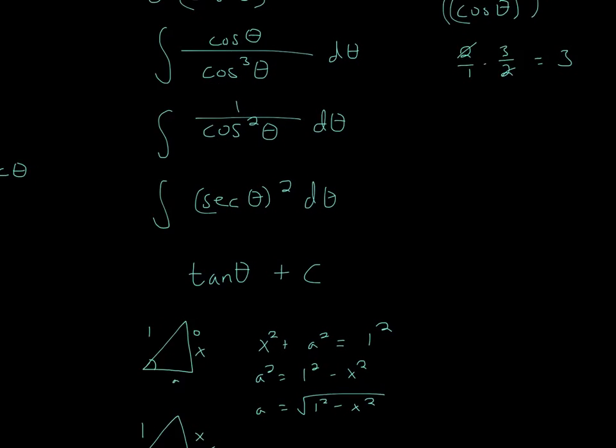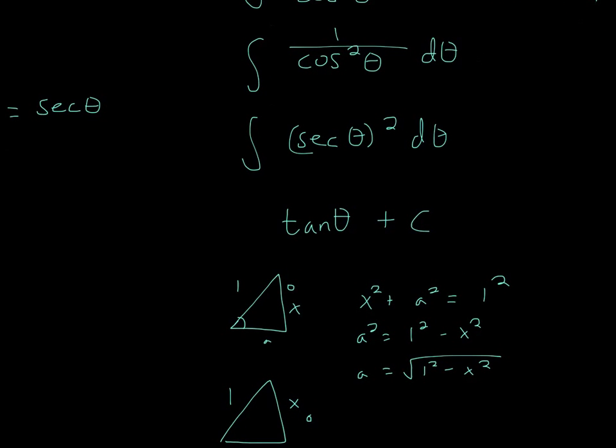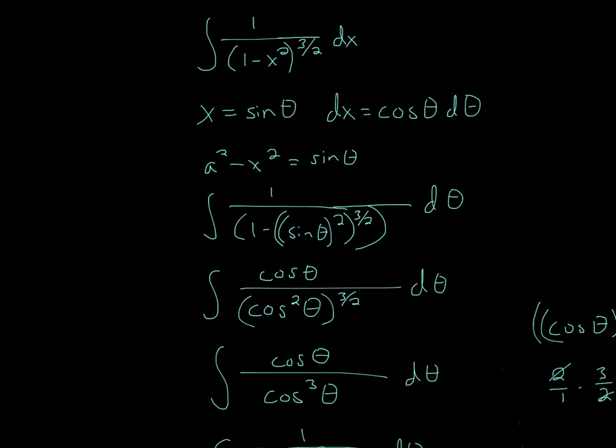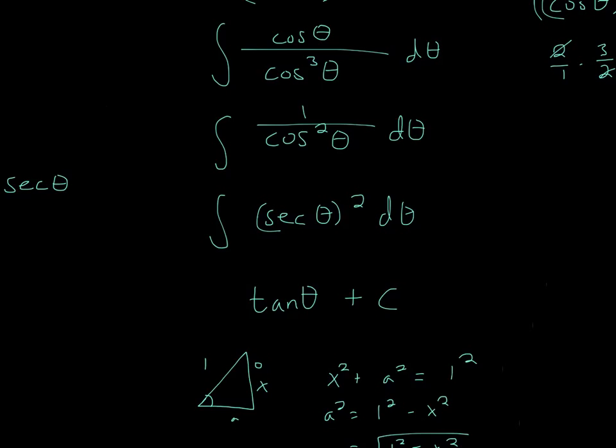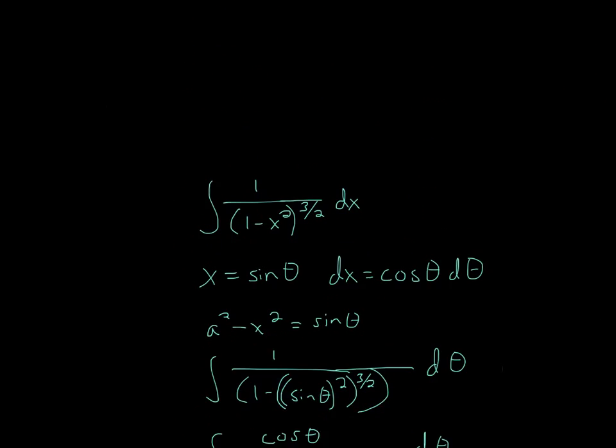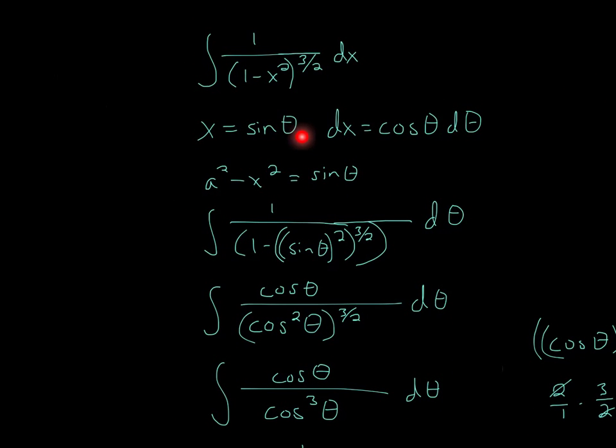The thing is, we're still not done, because the original equation had the variable of x, and then we did the trig substitution. So we have to convert it back into the x form. So we'll use this equation to do that. So for this equation, we said that x is equal to sine theta.